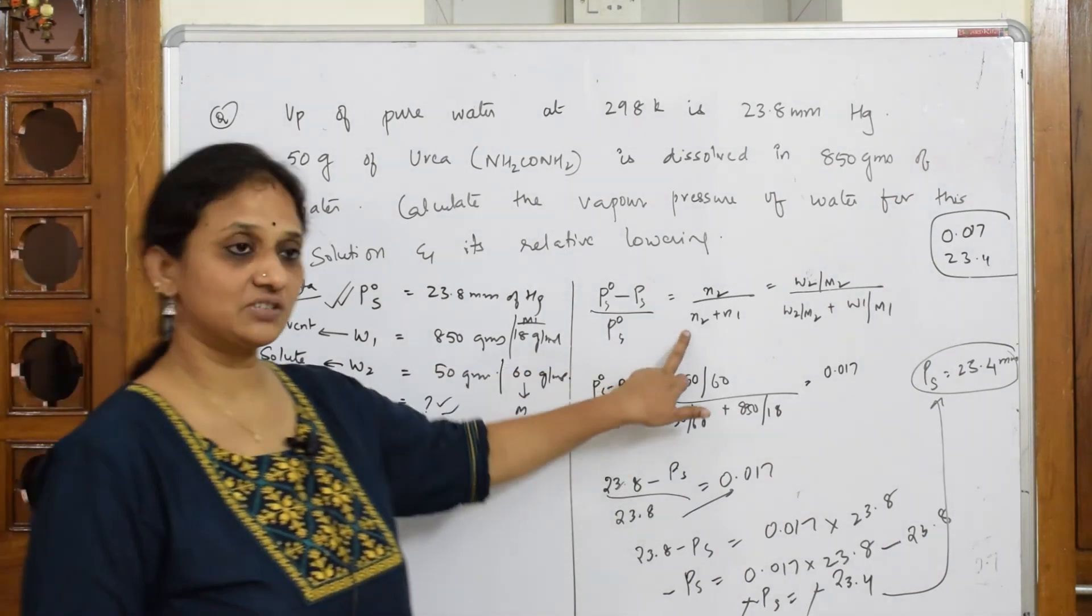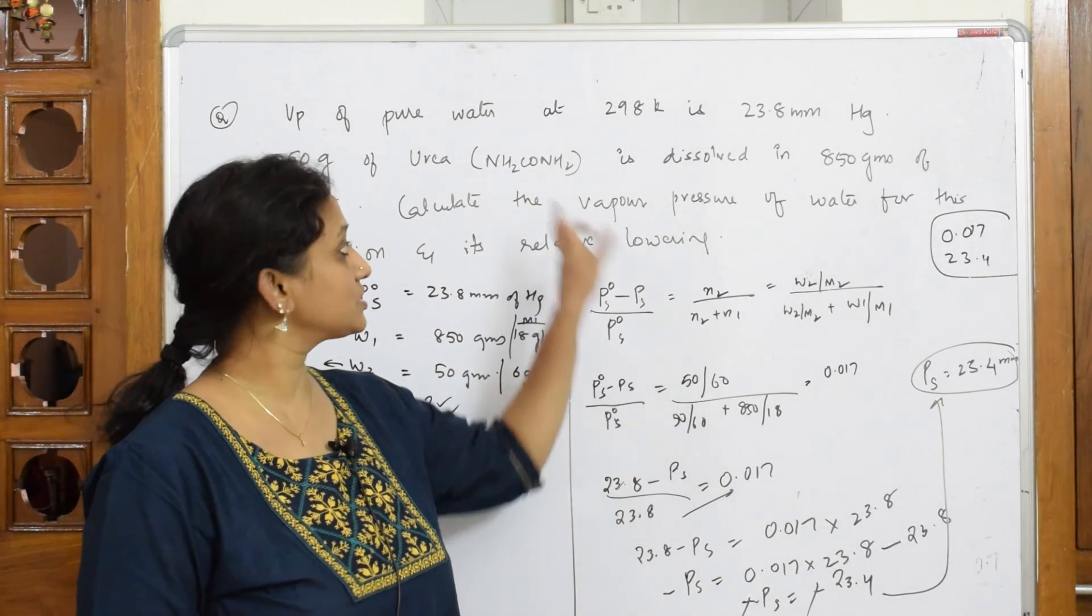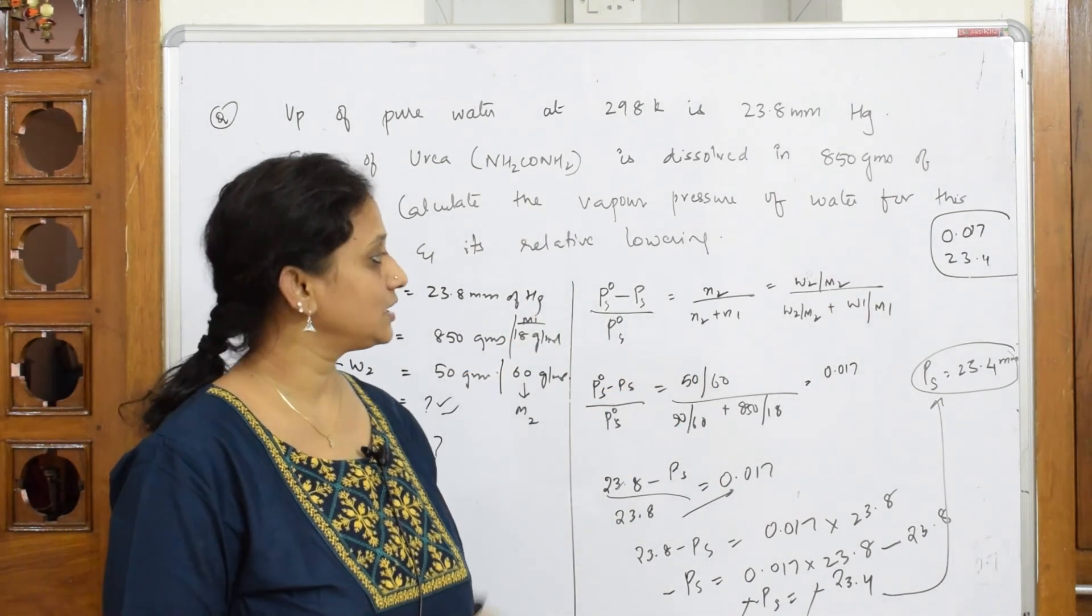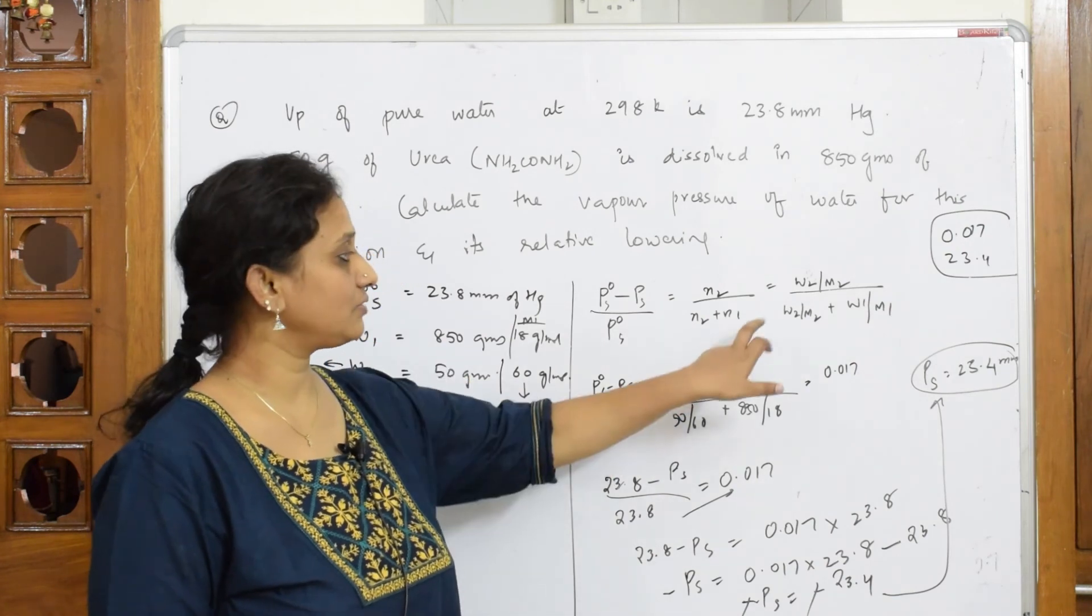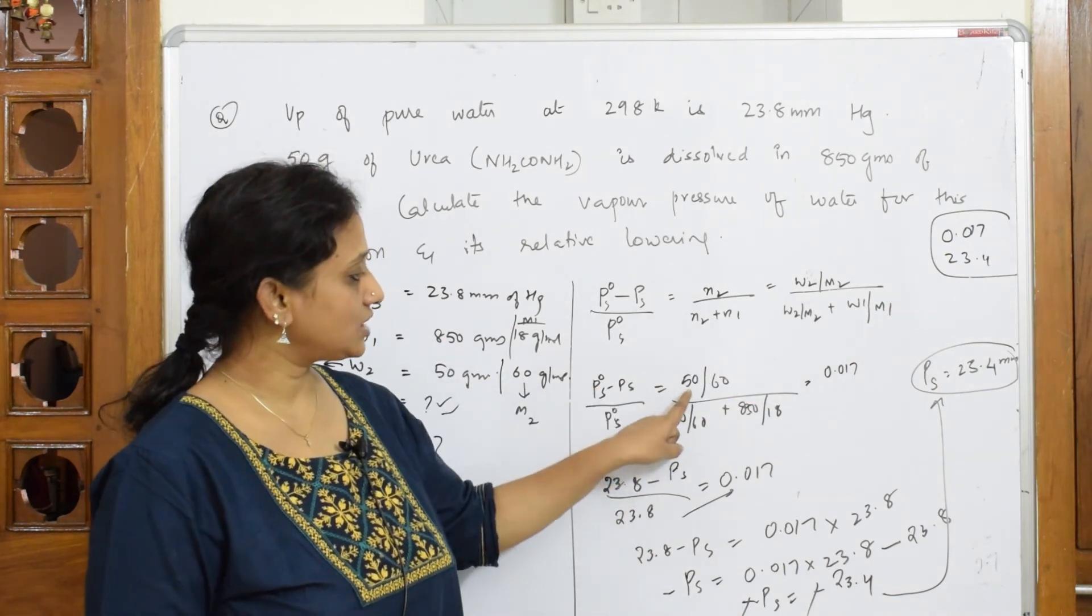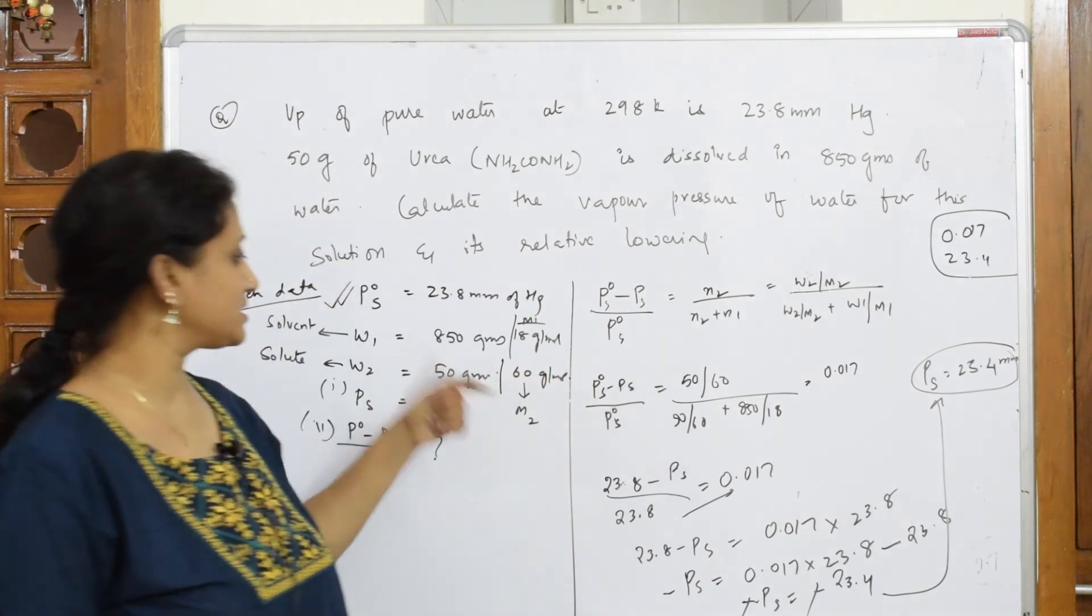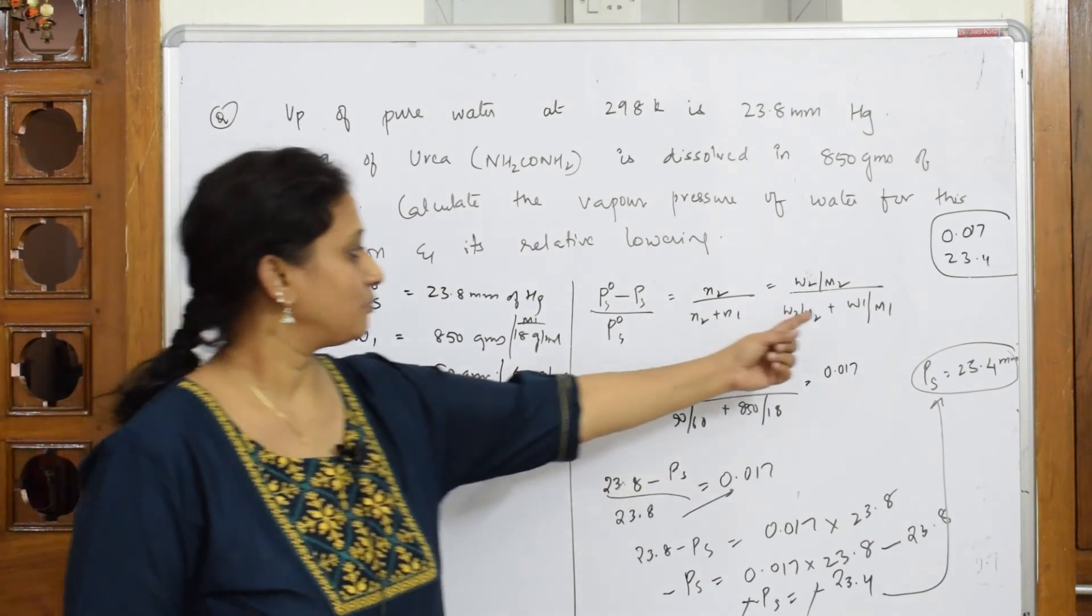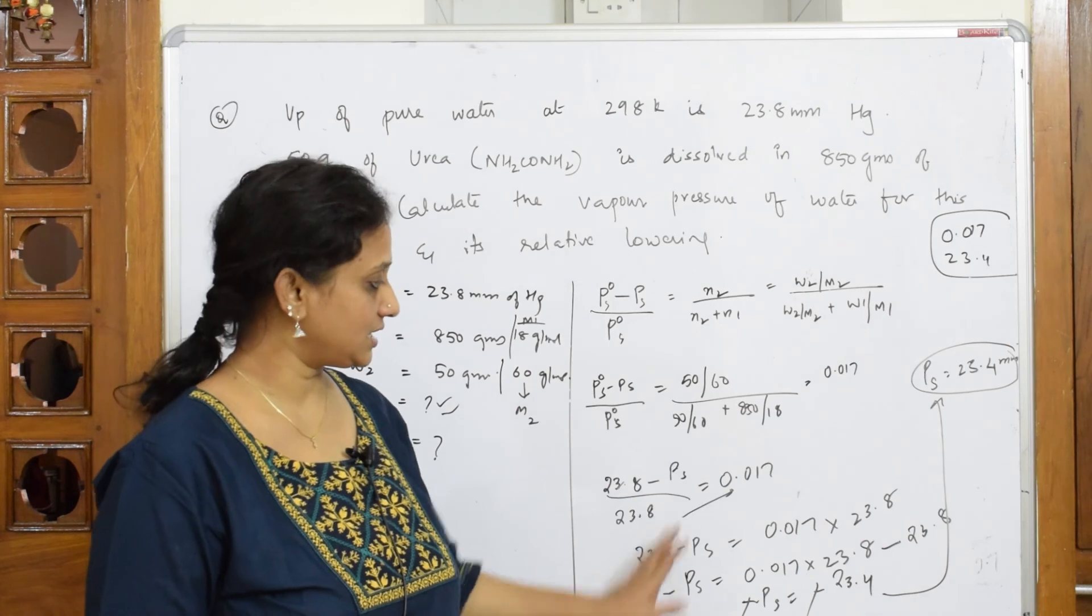Because the vapor pressure with the solute we have to find, always isn't it n2 by n1 plus n2. We never write n1 by n1 plus n2. Solute - that is, the vapor pressure is decreasing. They've given solute content in weight also, so you're going to write for solute.